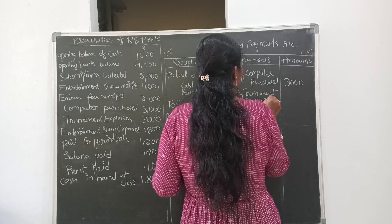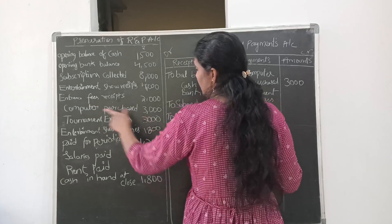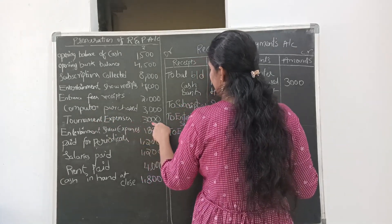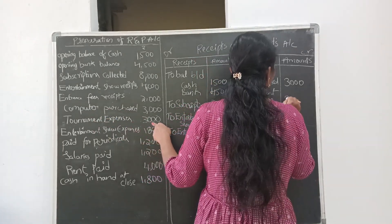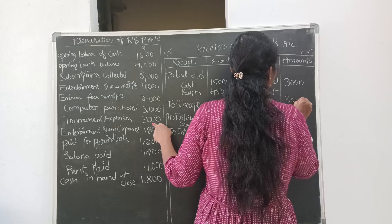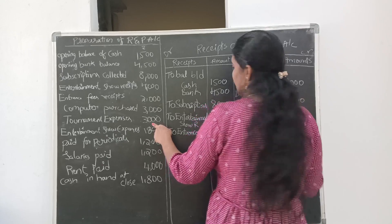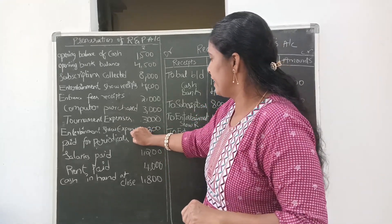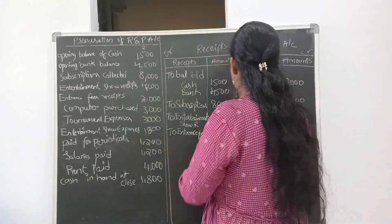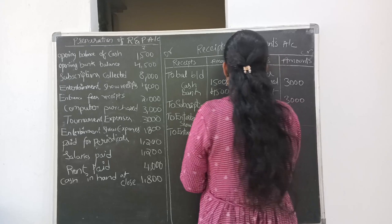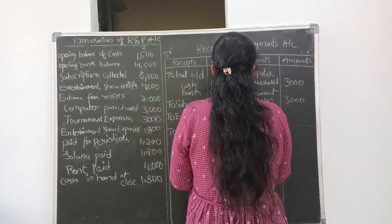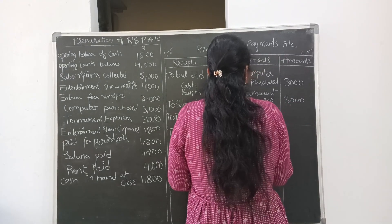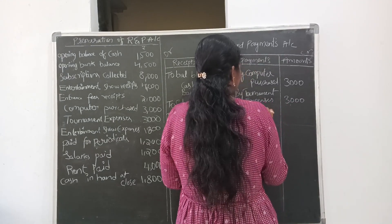The amount of tournament expenses is 3000. Next, coming to entertainment show expenses — this is also a payment, so we write entertainment show expenses on the credit side.